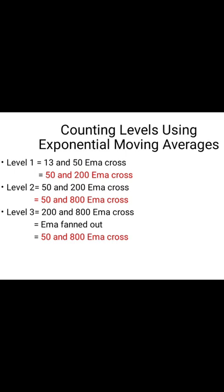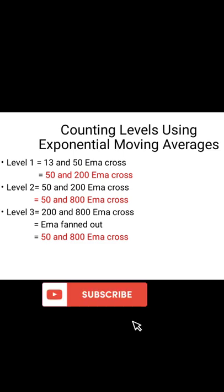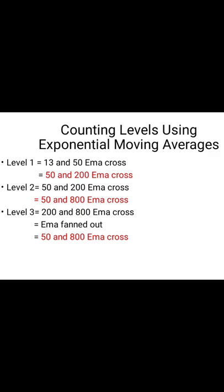Level three is the 200 and 800 EMA cross. When you see level three, all EMAs are either above or below — we call that level three. You can check my basics EMA video on the playlist. Also note that the 15 and 200 or the 15 and 800 can mean level two or level three.